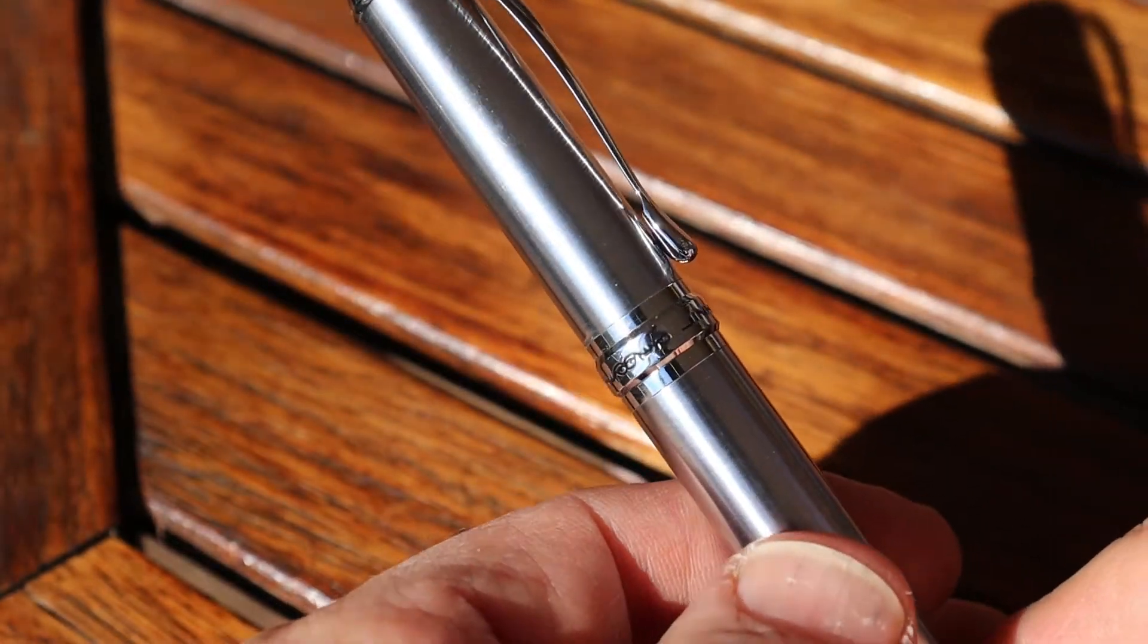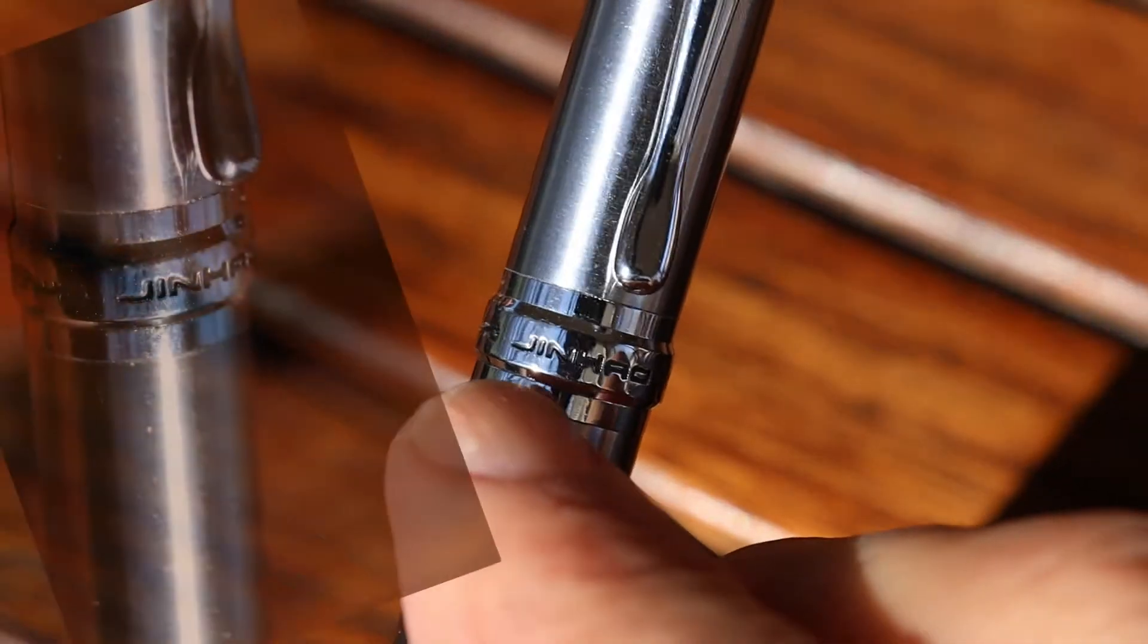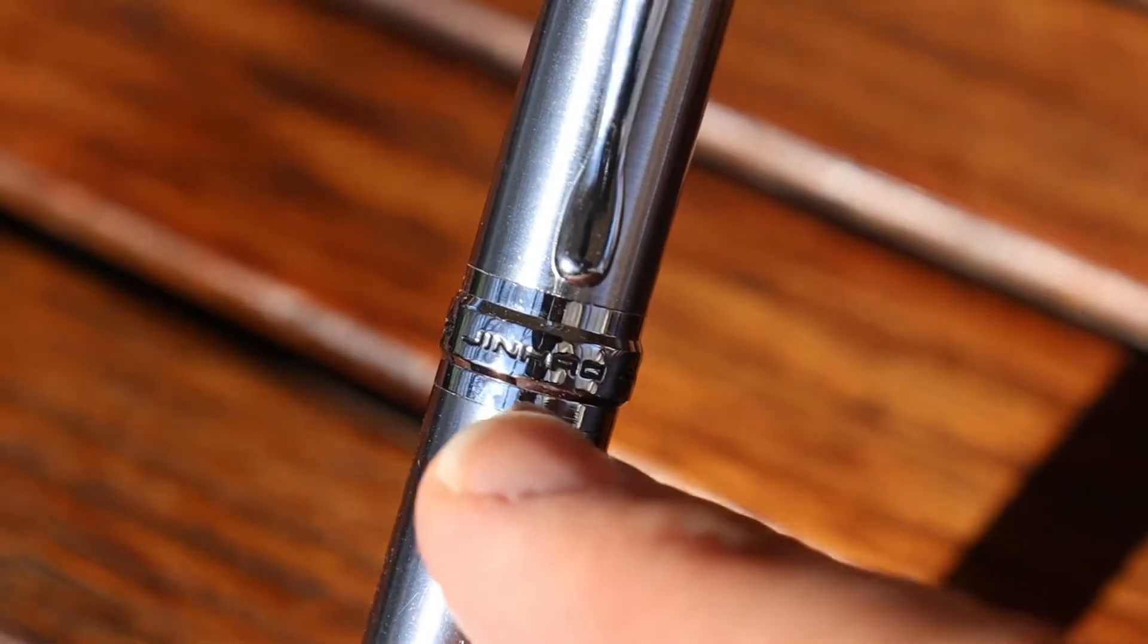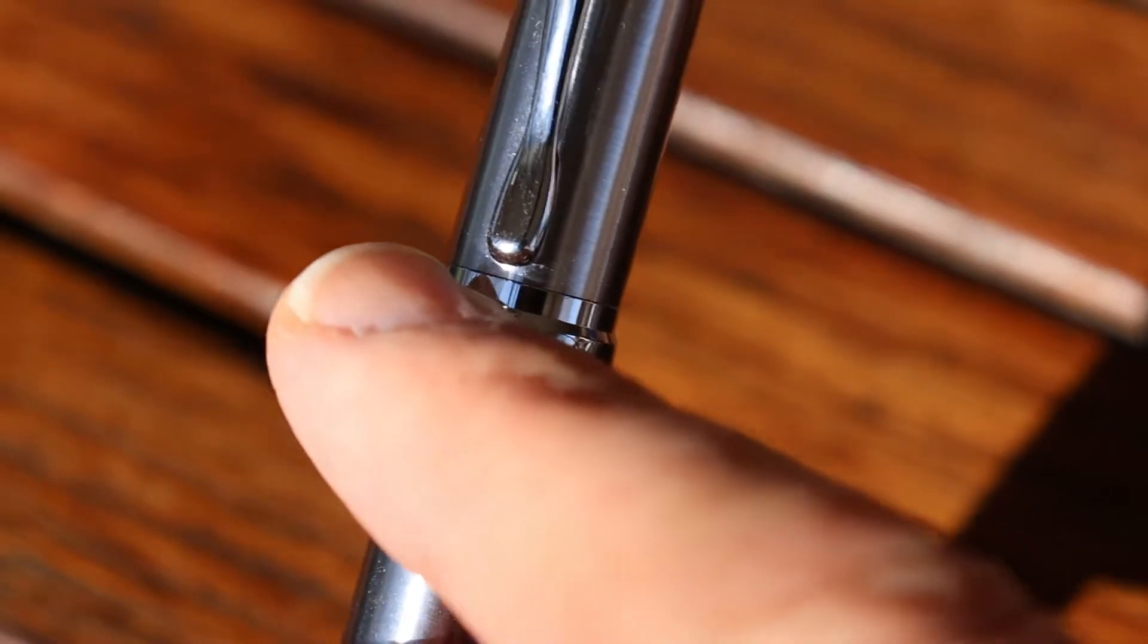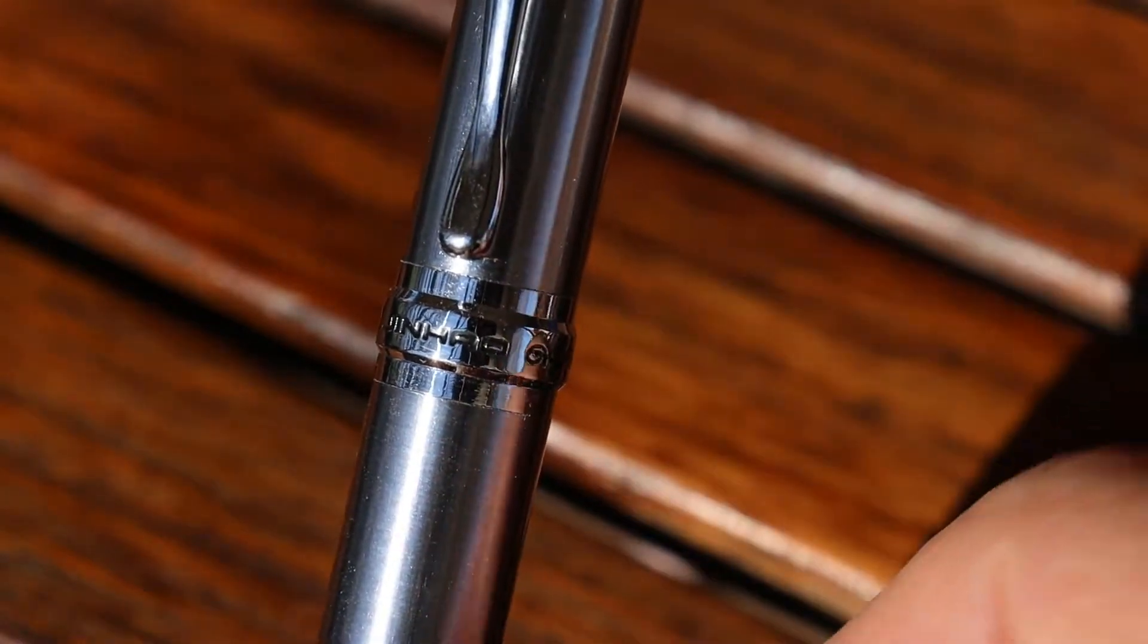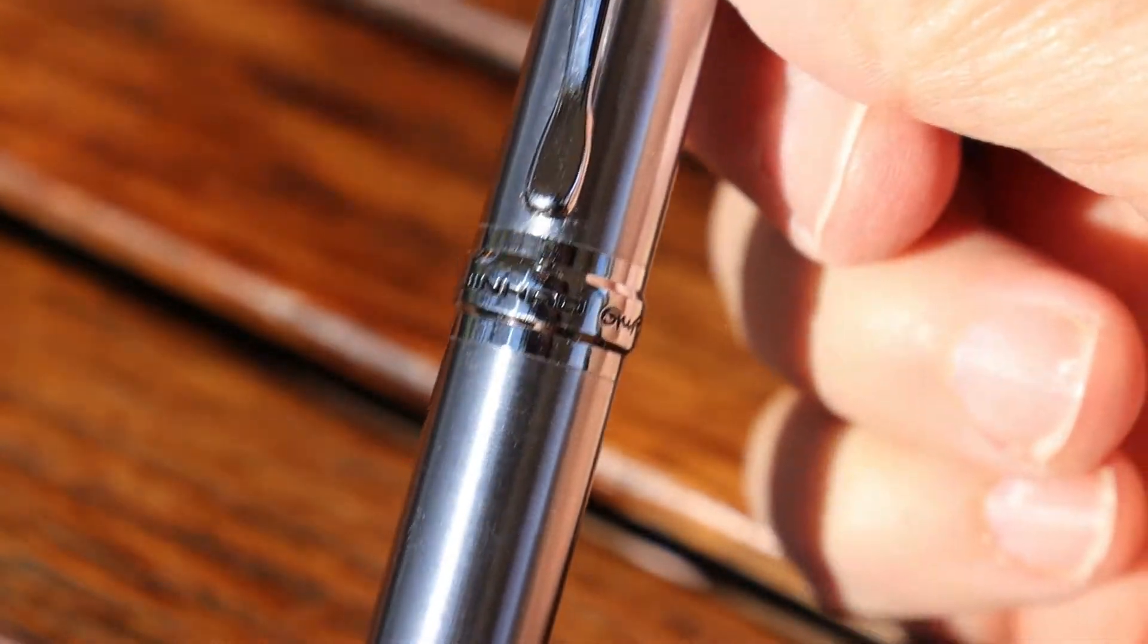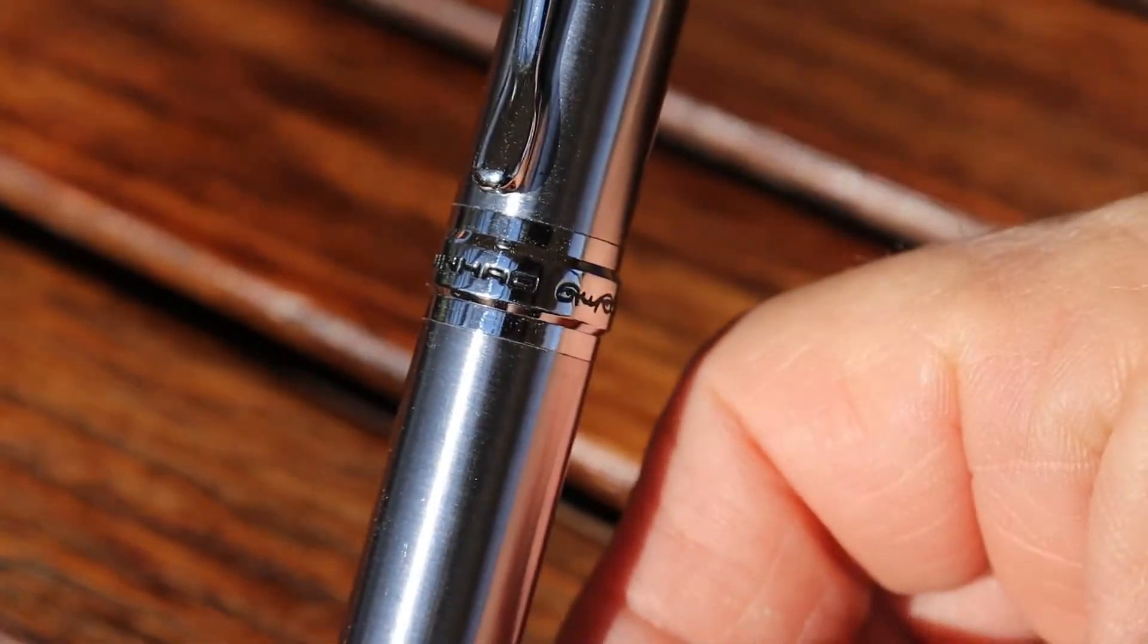Right here you have the Jinhao and I like the print on here. It's like it's stamped in and then painted in there. It's a heavier type of metal, brass probably.